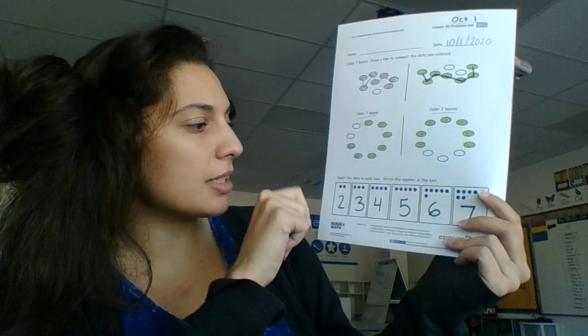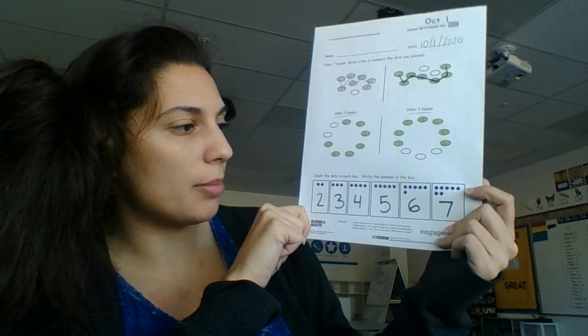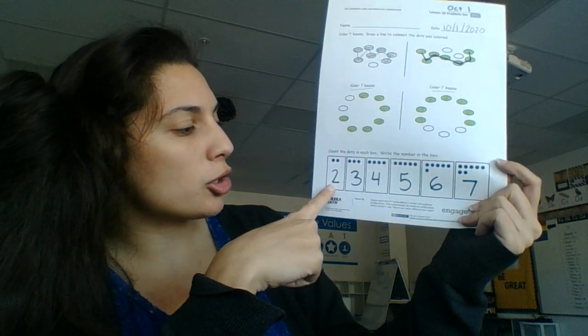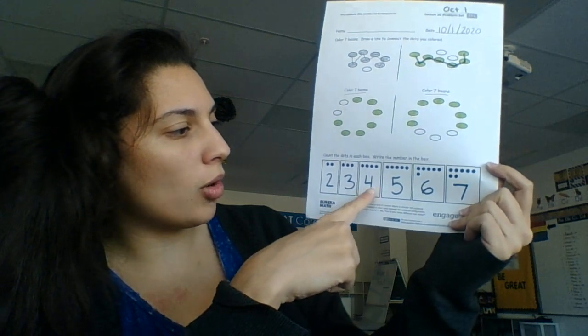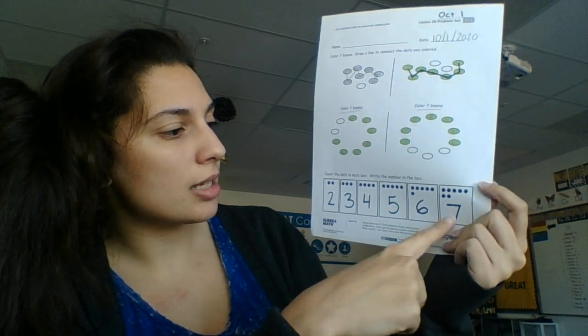Now down here, you had to count the dots in each box and then write the number in the box. So my numbers are two, three, four, five, six, seven.